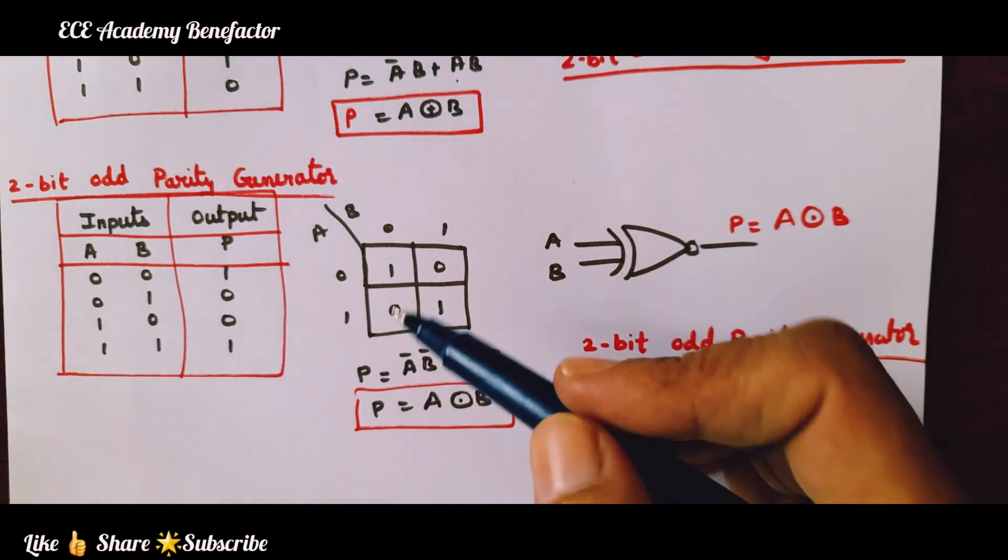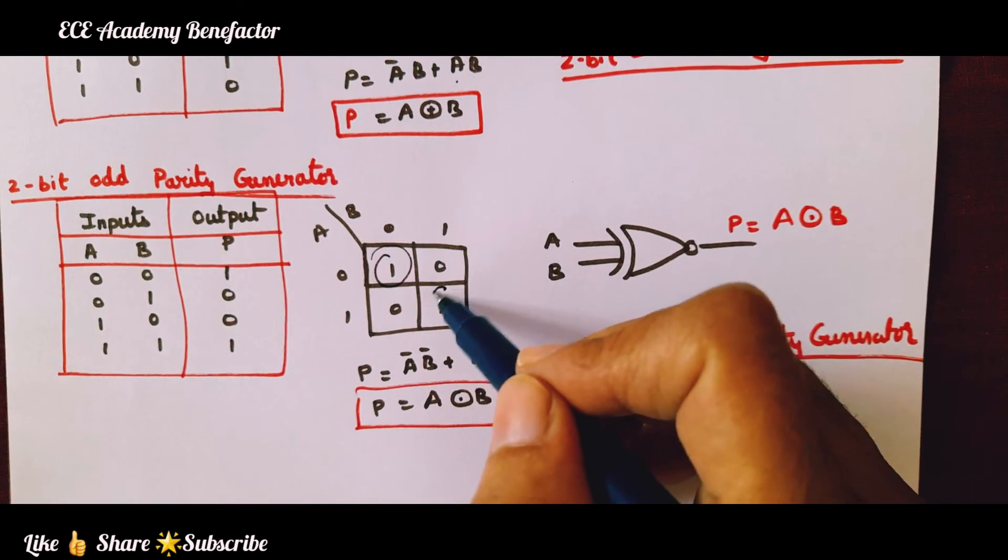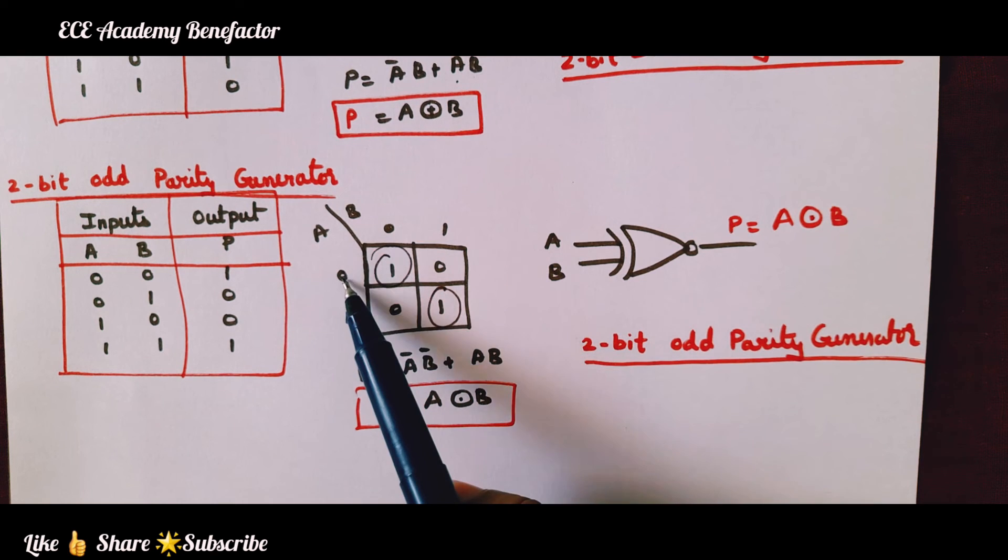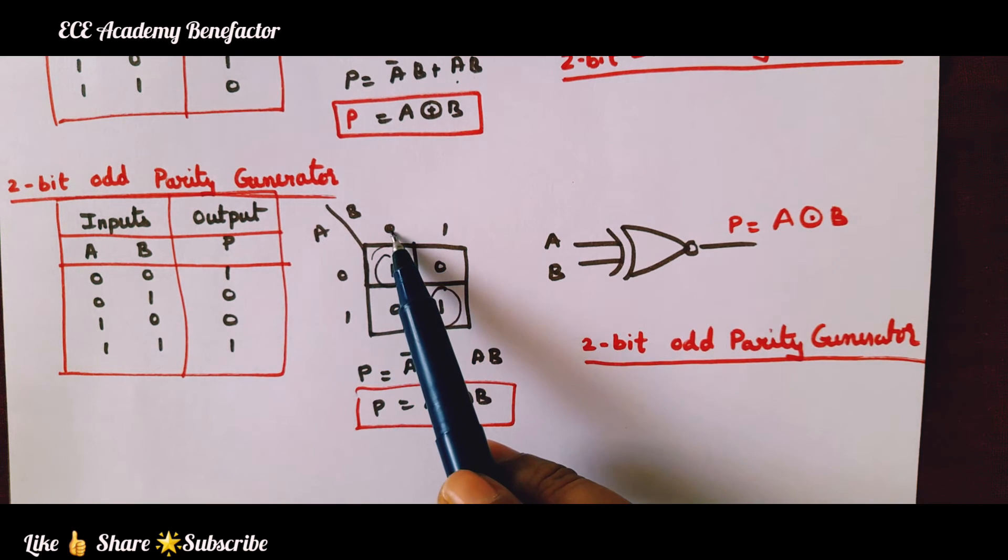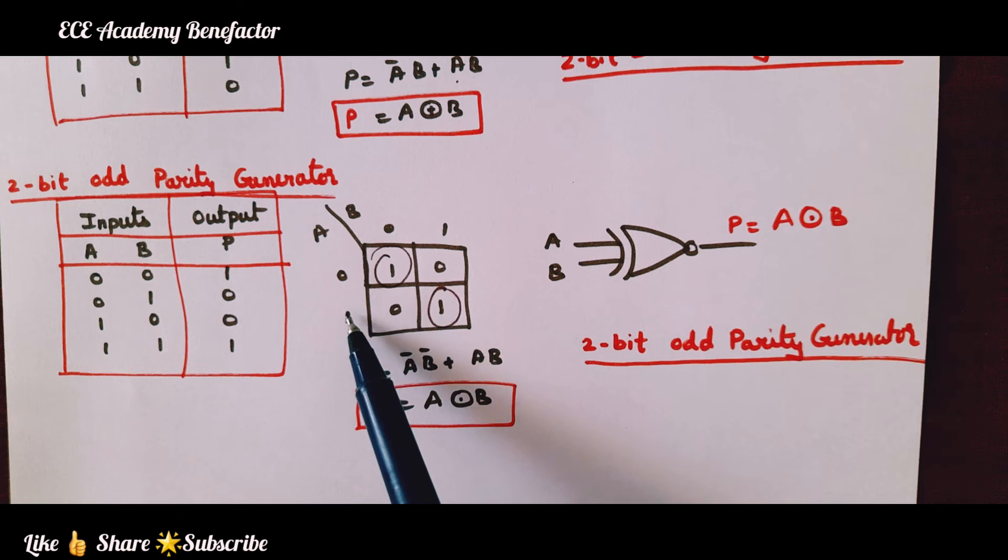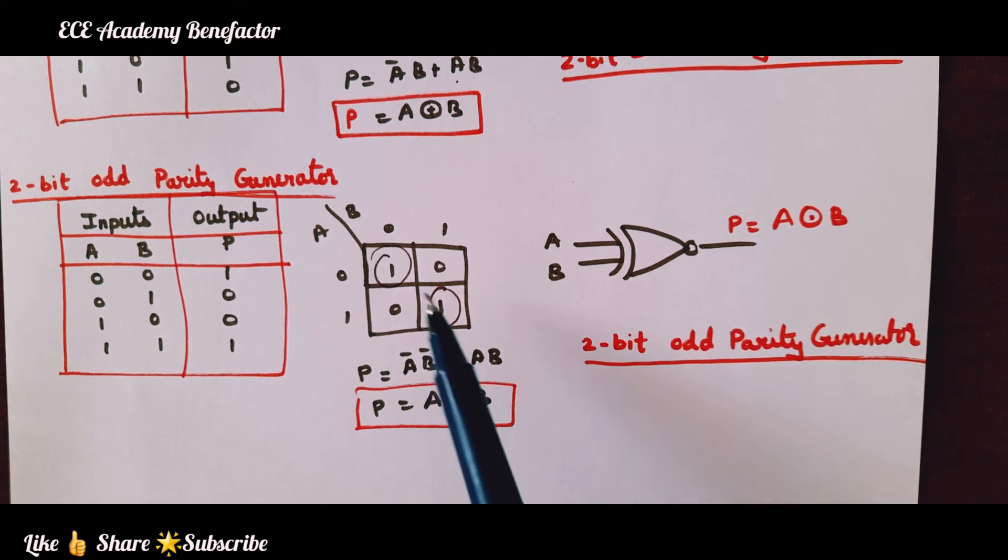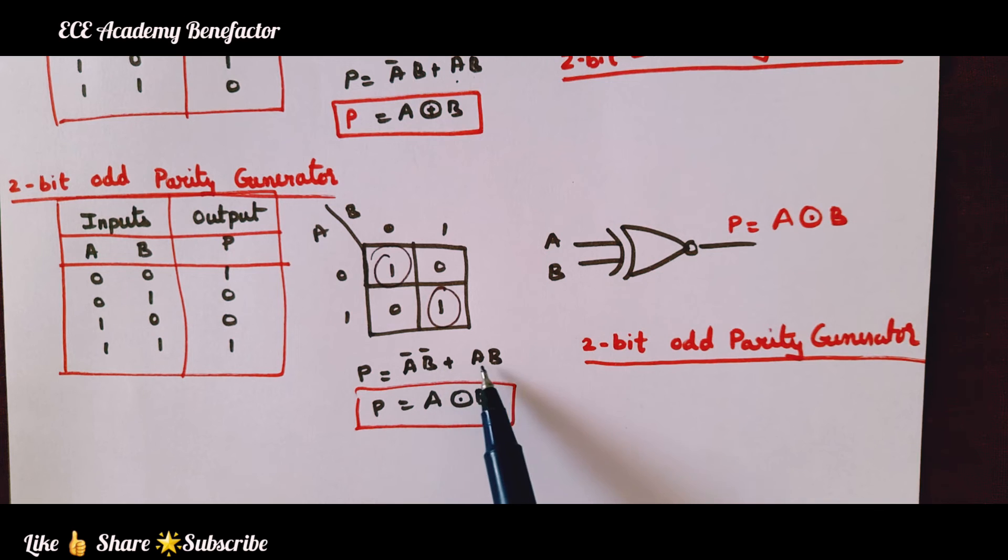Now fill this parity column: 1,0,0,1. Now let us group them. Single 1s are possible. For this one it is 0,0 that means A bar B bar. For this one it is 1,1, so A B. The term coming is A bar B bar plus A B.